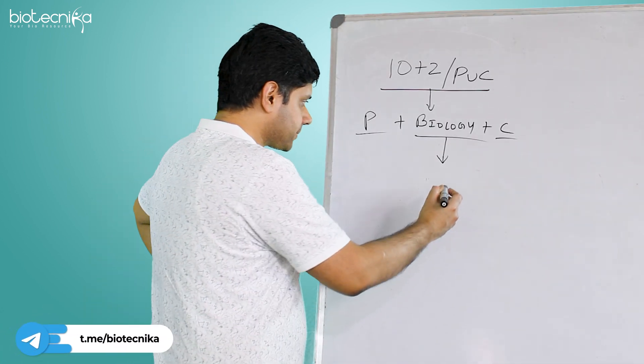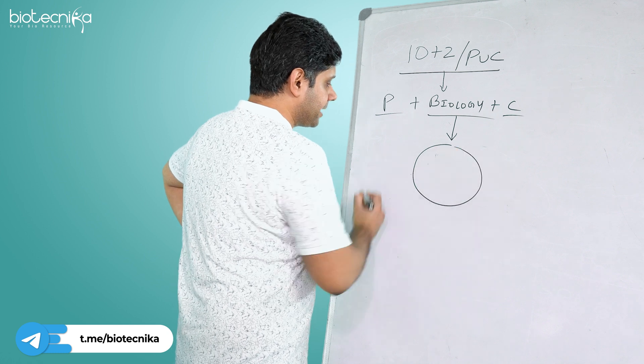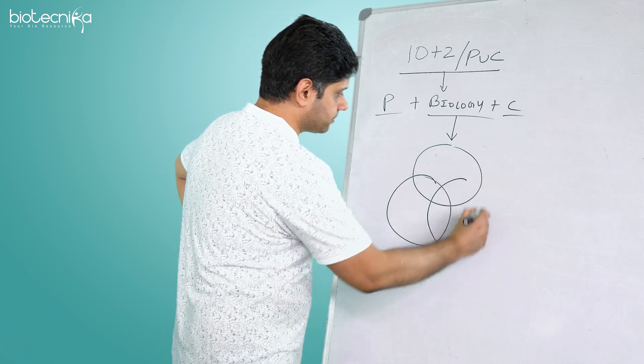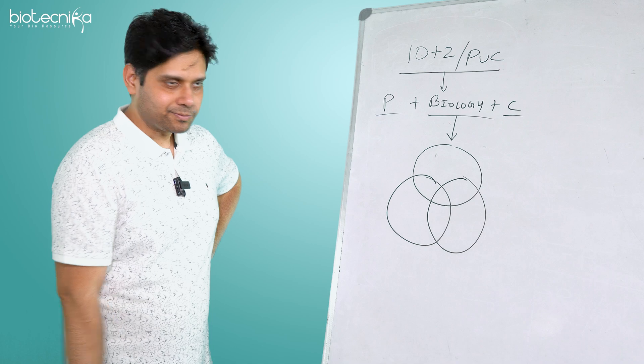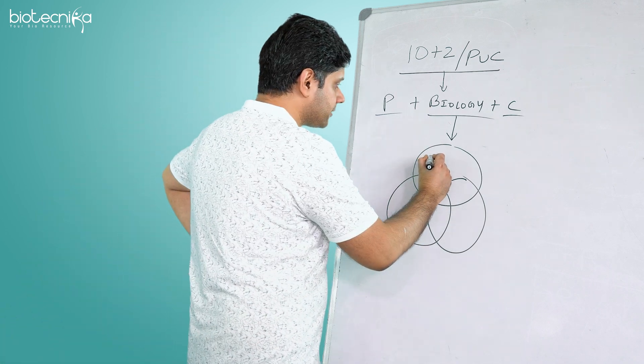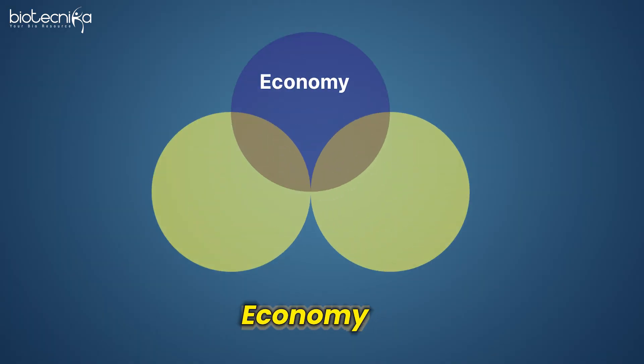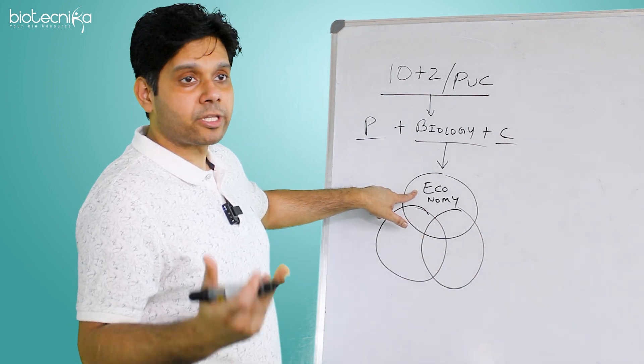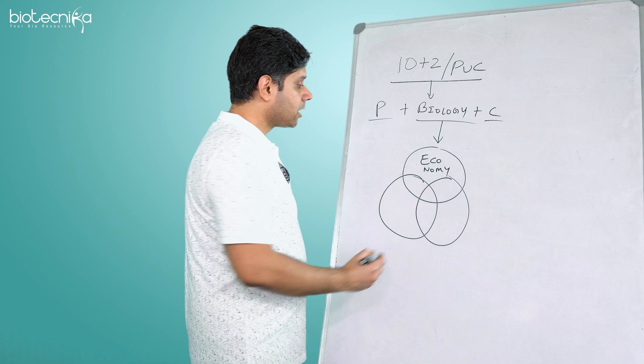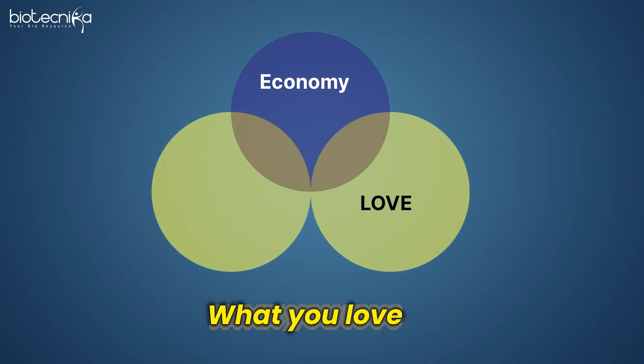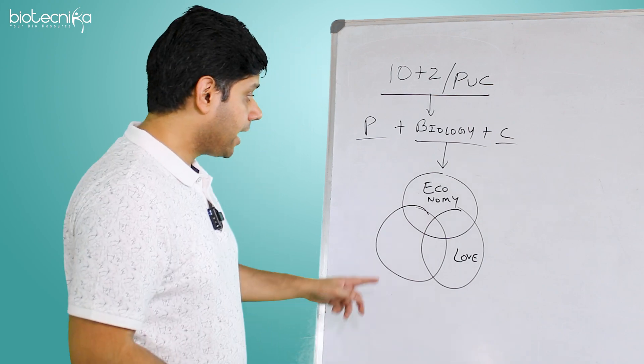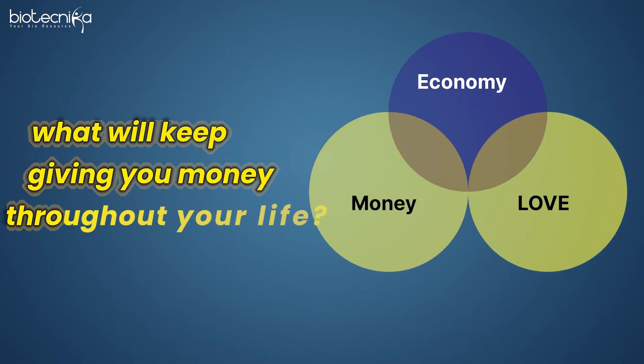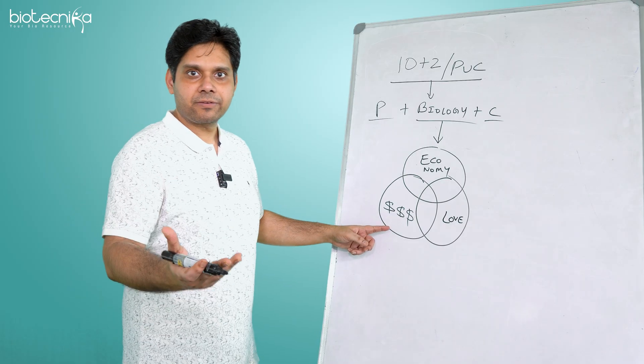Before I go to the next step, I'm going to draw a Venn diagram which will make things easy for you. The first is economy—what the economy or industry is demanding. Next is what you love, of course. Your love is biology or chemistry or something in that.